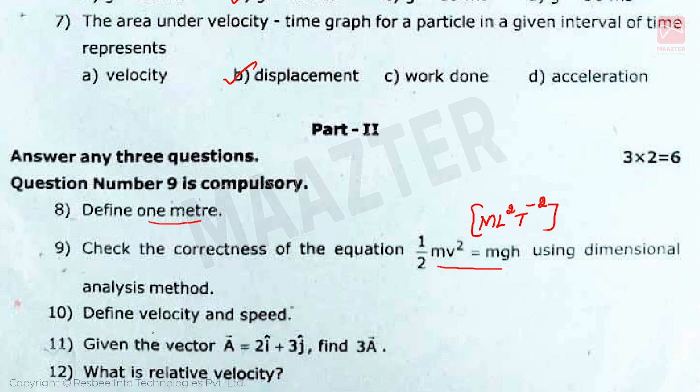Next question is: Define velocity and speed. Velocity is displacement of the object in unit time. Speed is rate of change of position of an object in any direction.